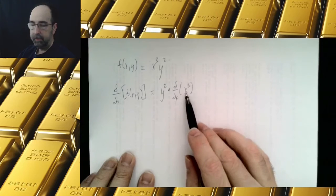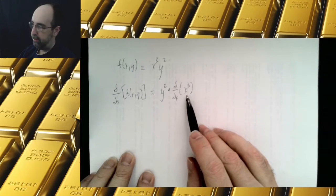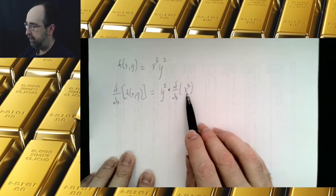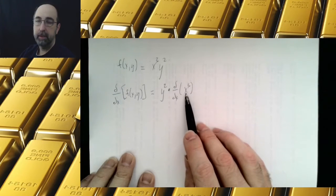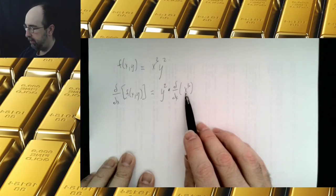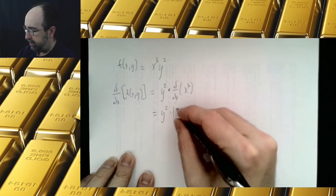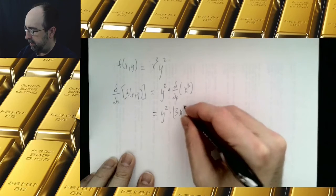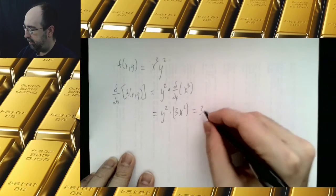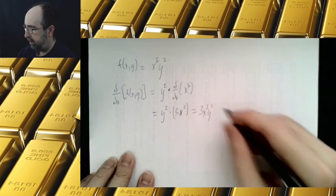Now this would be the good old power rule derivative, so you take the derivative with respect to x of x to the third power and you get 3x to the second power. So we have y squared times 3x squared, which can be simplified to 3x squared y squared.